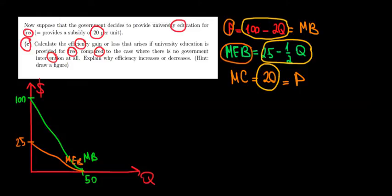Because the subsidy is 20 per unit, the marginal cost of education for the university is going to be zero, which is also the price for the students. So the students are going to consume 50 units of education. This is the intersection between the marginal benefit and the marginal cost.